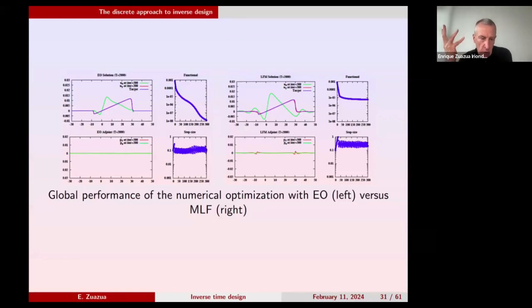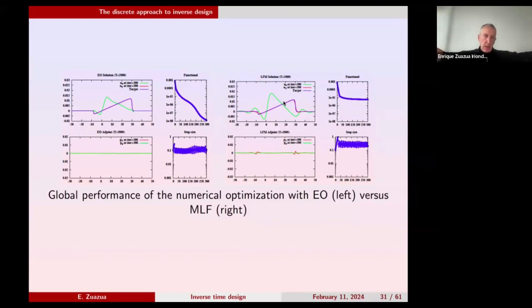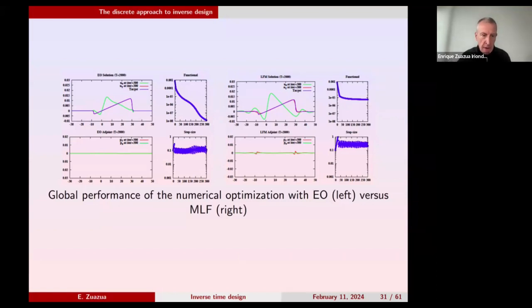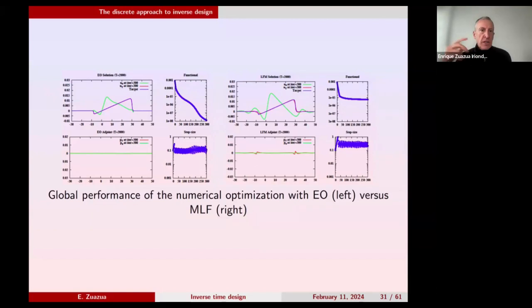You can compare both schemes: Engquist-Osher on the left, Lax-Friedrichs on the right. The functional goes much more nicely down to zero with Engquist-Osher than with Lax-Friedrichs, which saturates early. As a result, the matching of the red and blue lines is better with Engquist-Osher, and the initial datum it produces is smoother, while Lax-Friedrichs produces a more oscillatory initial datum. Now the fundamental question: are these two different initial data both compatible with the final target, or is one wrong?